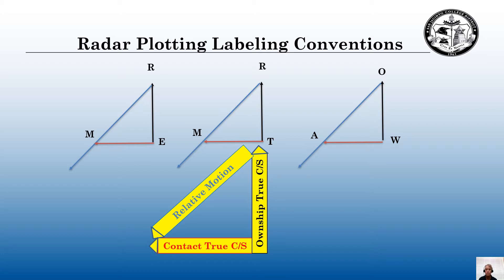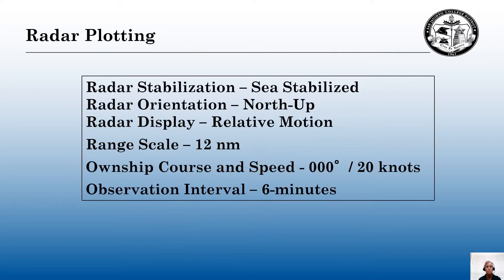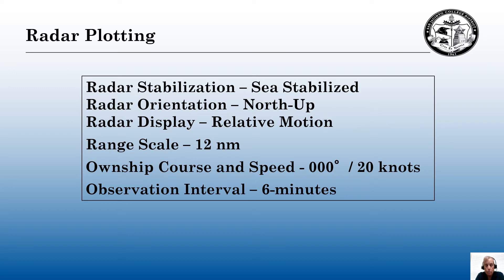Each one of those legs represents the yellow triangle. For radar plotting, I'm going to be using a C-stabilized north-up relative motion radar. My range scale is going to be 12 nautical miles. My own ship's true course and speed is going to be 000 degrees at 20 knots. My observation interval is going to be six minutes. The advantage of six minutes is it's one-tenth of an hour, which really facilitates time-speed-distance calculations.